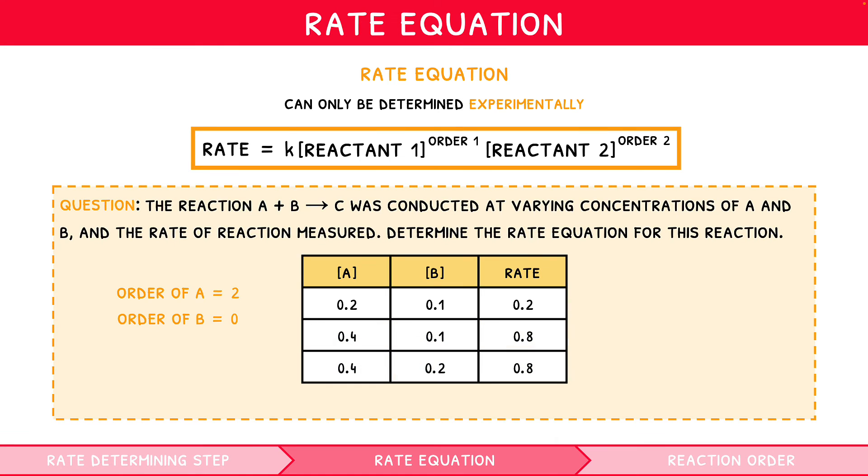The rate expression would therefore be rate equals K A squared B to the zero. It is worth noting that since zero order reactions have no impact on the rate, they are often excluded from the rate expression. So, this can also be written as rate equals K A squared.